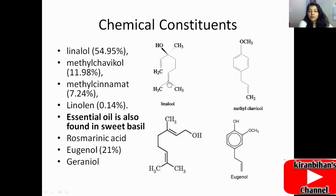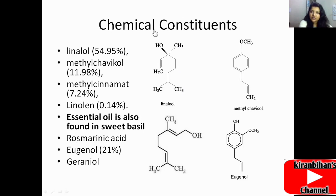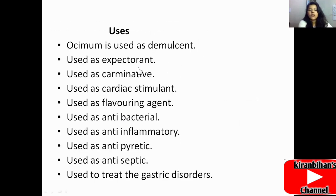Looking at the linalool structure, we can classify it as a monoterpene. You can count the carbons in the structure: one, two, three, four, five, six, seven, eight, nine, ten — there are ten carbons present. Because there are ten carbons, we call it a monoterpene.